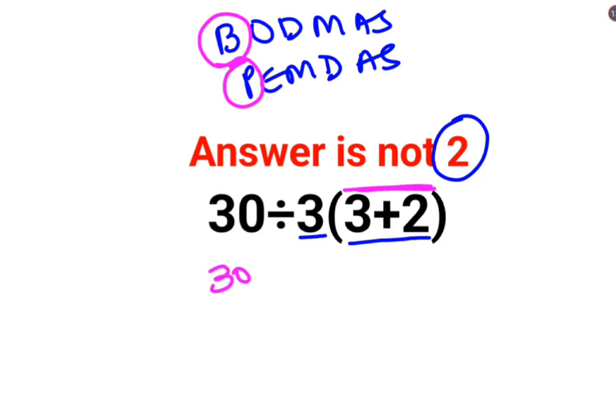So here we will keep 30 divided by 3 as it is and between 3 and the bracket there is no sign means it is multiplication and the bracket is 3 plus 2 which is 5. Till here everybody is doing fine.